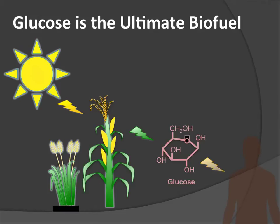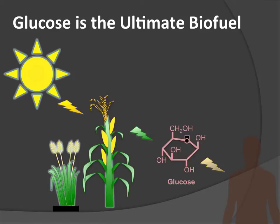Glucose is immensely important to us. It is what we call the ultimate biofuel, basically because it is a raw ingredient in respiration — our cells use it to carry out respiration. We obtain our glucose from eating it. We're looking at plants that have produced glucose through photosynthesis. Because we are omnivores, we also eat animals that have previously consumed plants. Generally speaking, plants are the source of our glucose by carrying out photosynthesis, getting that energy from sunlight.